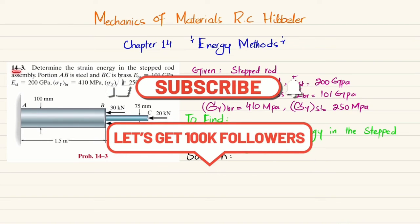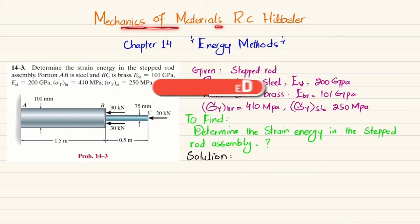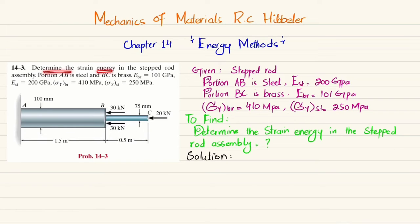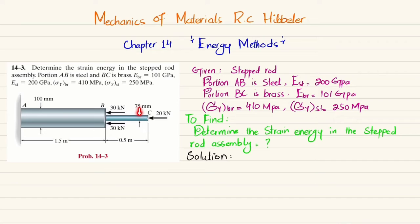Welcome back. Problem 14-3 is taken from Chapter 14 on energy methods in Mechanics of Materials by R.C. Hibbeler. The problem asks us to determine the strain energy in the step rod assembly, where portion AB is steel and BC is brass. The modulus of elasticity of brass is 101 GPa and steel is 200 GPa. The yield stress of brass is 410 MPa and steel is 250 MPa. The diameter of rod AB is 100 mm and BC is 75 mm.